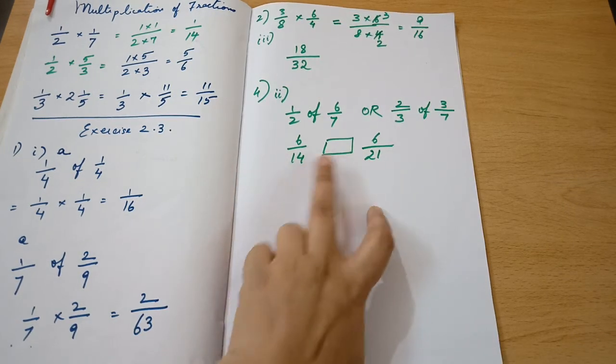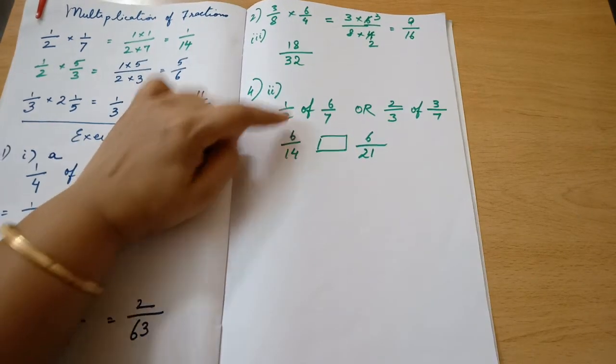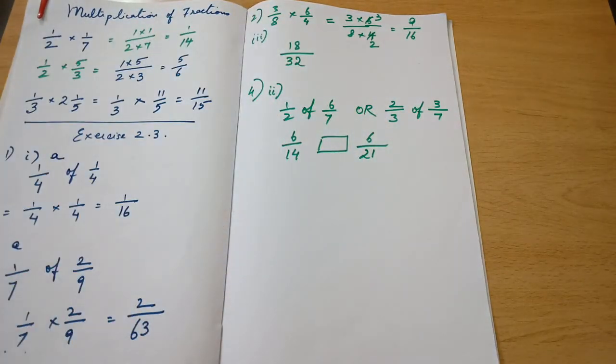One way is to equate the denominators and compare. An easier way is when the numerators are equal, you can still compare. How will you do it?